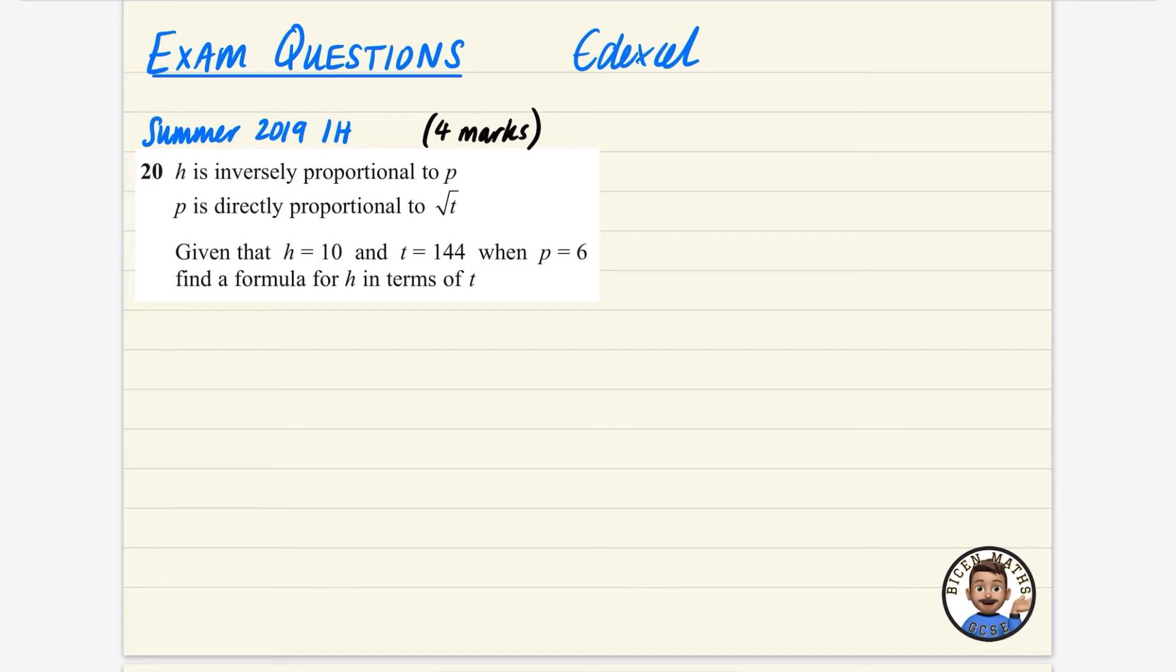So it says here that H is inversely proportional to P, and then P is directly proportional to the square root of T. It then tells us all this information here, and it wants us just to find out what H is in terms of T.